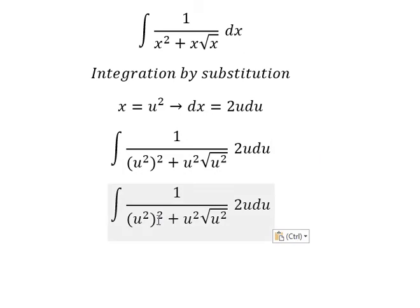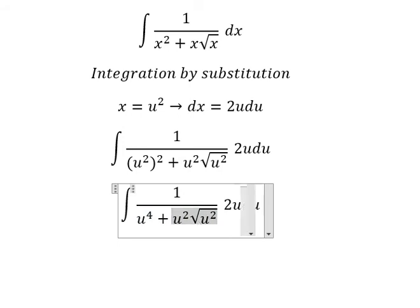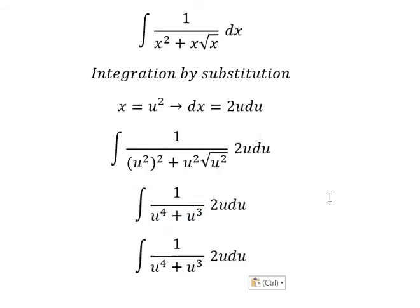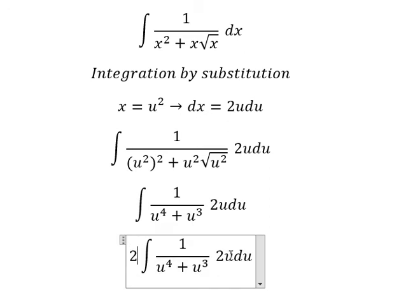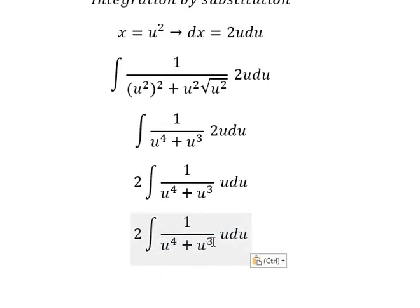After substituting, we get u to the power of four in one term, and u to the power of three in another. Next, I will factor out u to the power of three using factorization.